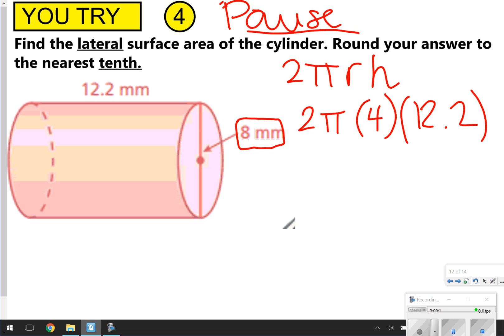Again, I'm going to multiply just my numbers. 2 times 4 is 8. And 8 times 12.2 should have been 97.6. So that's my answer in terms of π. But again, I want to round it to the nearest tenth. So I'm going to do 97.6 times 3.14.